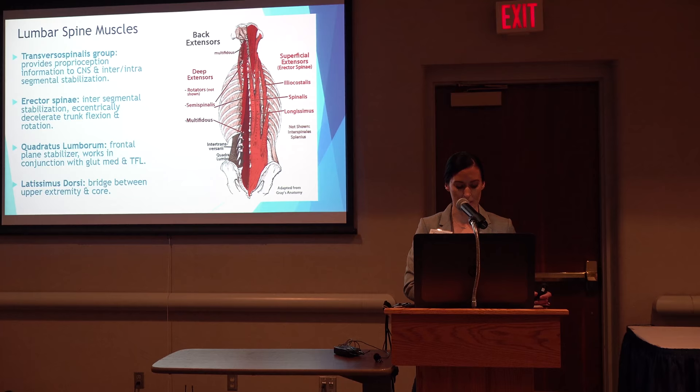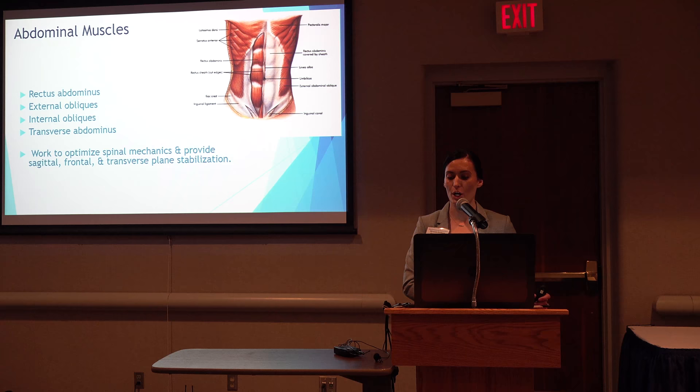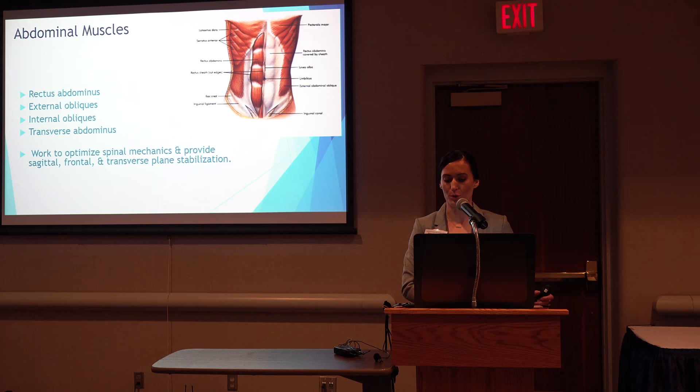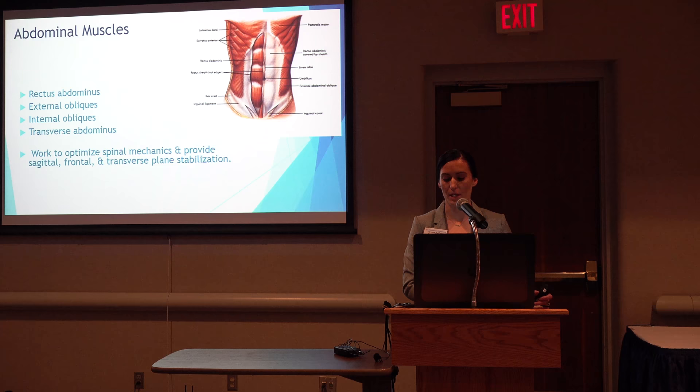We have the abdominals, which consist of the rectus abdominis — an important posture muscle that produces lumbar flexion and posterior pelvic tilt; the external obliques, which bilaterally flex the trunk, ipsilaterally side flex, and contralaterally rotate; the internal obliques, which ipsilaterally side flex and rotate and work with the contralateral external oblique; and the transverse abdominis, which stabilizes the lumbar spine and pelvis before movement and maintains intra-abdominal pressure. Together, the abdominals optimize spinal mechanics and provide sagittal, frontal, and transverse plane stabilization.